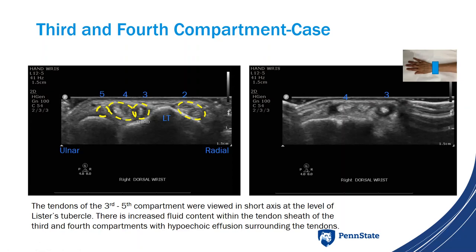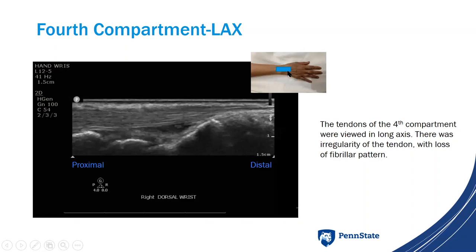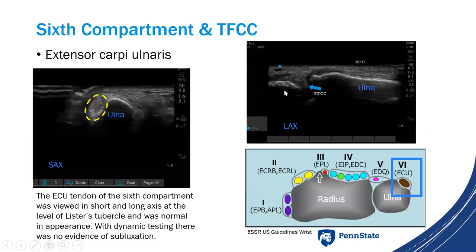I don't always look at long axis in a dorsal wrist exam unless there's an abnormality in short axis warranting further evaluation — which is the case here. Rotating the probe to long axis, with proximal to the left and distal to the right, we look at the fourth compartment tendons. In long axis, there is loss of the normal fibrillar nature of the tendons, indicating tendinopathy. Sonopalpation did not elicit pain, but this is another useful part of the ultrasound exam.